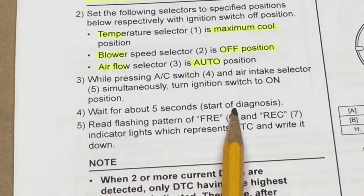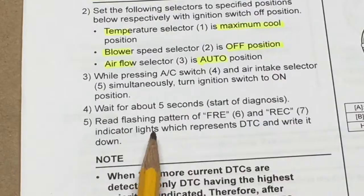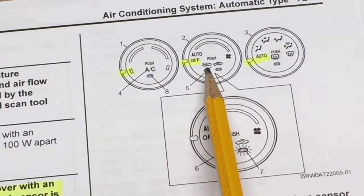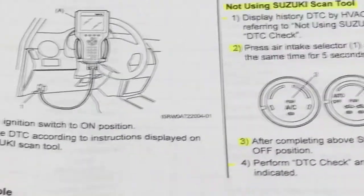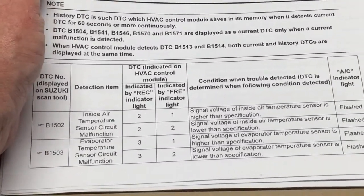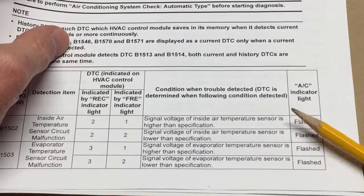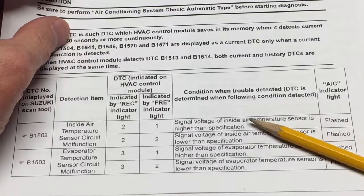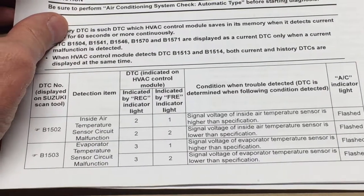Wait for five seconds for the diagnosis procedure to actually start, and write down the flashing pattern of both the fresh and the recirc indicator lights. Once you retrieve those codes, they don't do you any good unless you can make use of them in the manual. I'll go through all the codes here - you can put it in slow mode or review it as required. By the way, not every failure in the system is going to translate to the AC light actually flashing. As you can see, this test is actually quite comprehensive - it tests a bunch of sensors on the car.